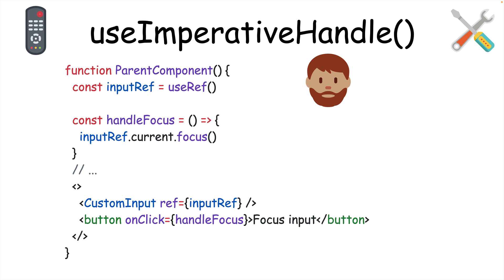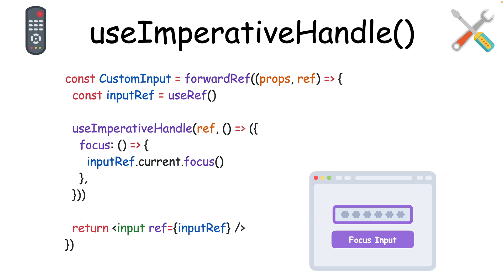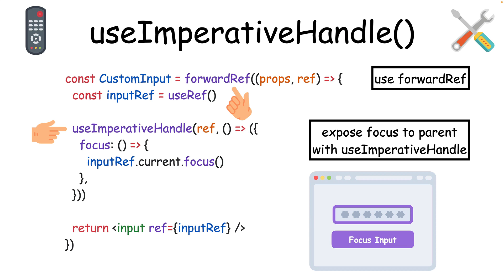Let's say you have a parent component that wants to focus an input within a child component. To do that, you need to first forward the ref to the child with the forwardRef function, which won't be required in React 19, and to expose the focus method to the parent ref, you use useImperativeHandle to put that method on the ref.